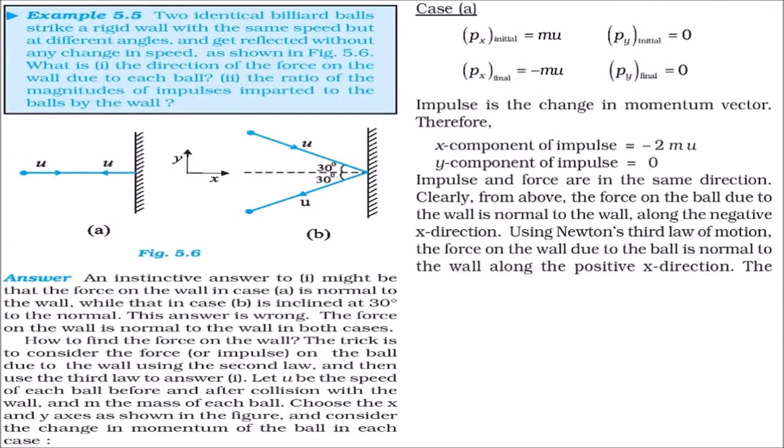Let us take an example. Two identical billiard balls strike a rigid wall with the same speed but different angles. One like this and one with a certain angle.